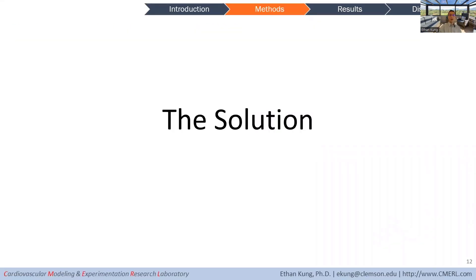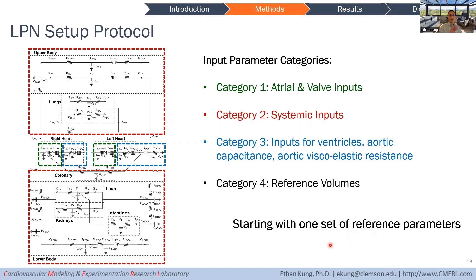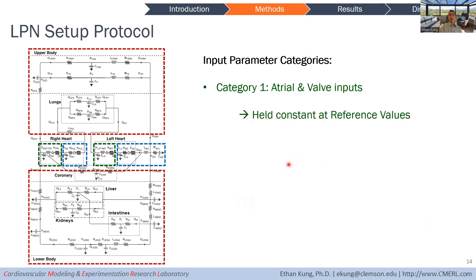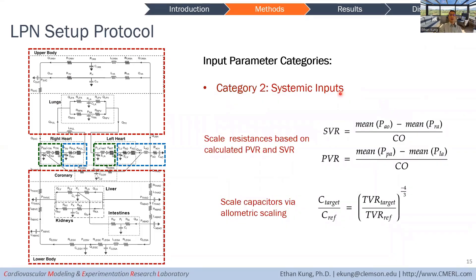Here's the solution we worked out. We start with one fixed set of reference parameters and tune them by separating them into four categories. The first category is atrial and valve parameters, which work well without much tuning, so we hold them constant at their reference values. The second category is systemic resistances and capacitances — we calculate total vascular resistance, systemic and pulmonary vascular resistance using target hemodynamic values, then scale resistances and capacitances accordingly.